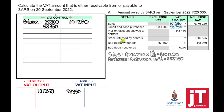VAT on discount allowed to debtors — they provided the figure, so there's no calculation involved. VAT on discount allowed to debtors means there will be a reduction in the amount that we owe SARS. Therefore, VAT output will be debited, and if VAT output is debited, the VAT control account will be debited.